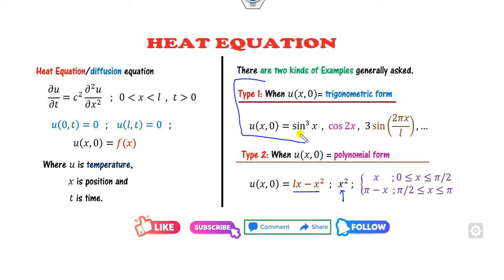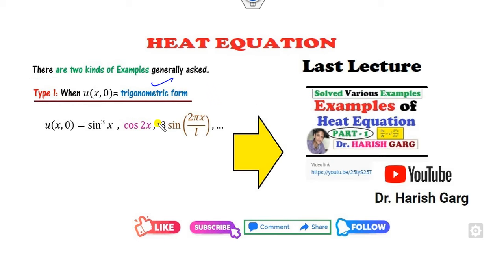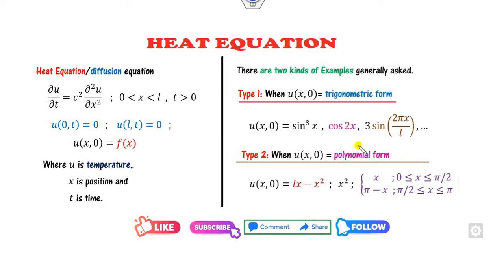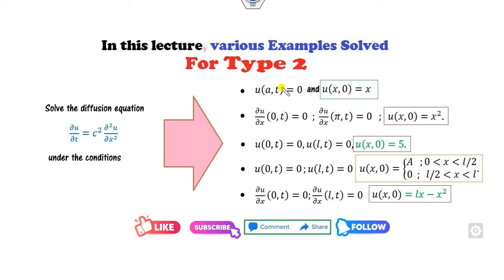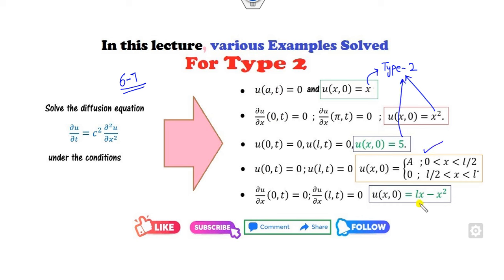In the last lecture I explained how to solve type 1. In this lecture I will explain how to solve the polynomial form, type 2. Examples include f(x) = x, x², or any constant — all are polynomials and hence type 2.